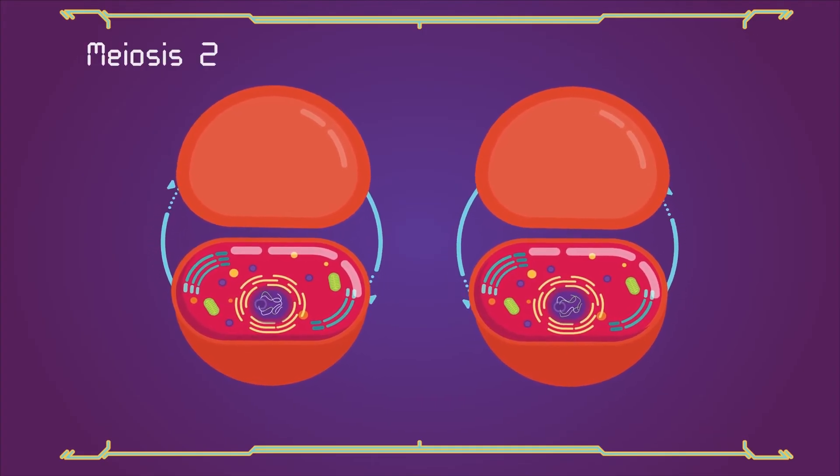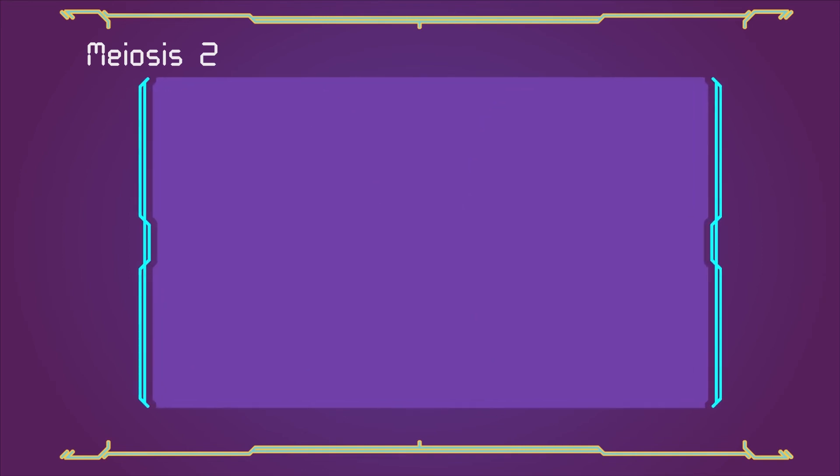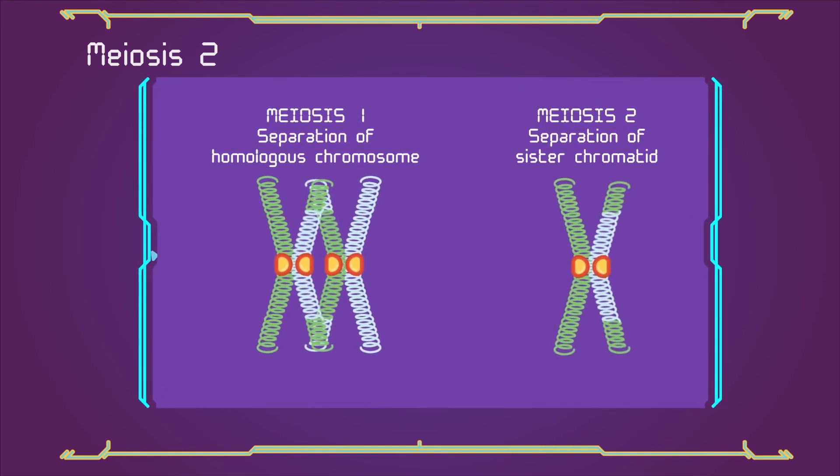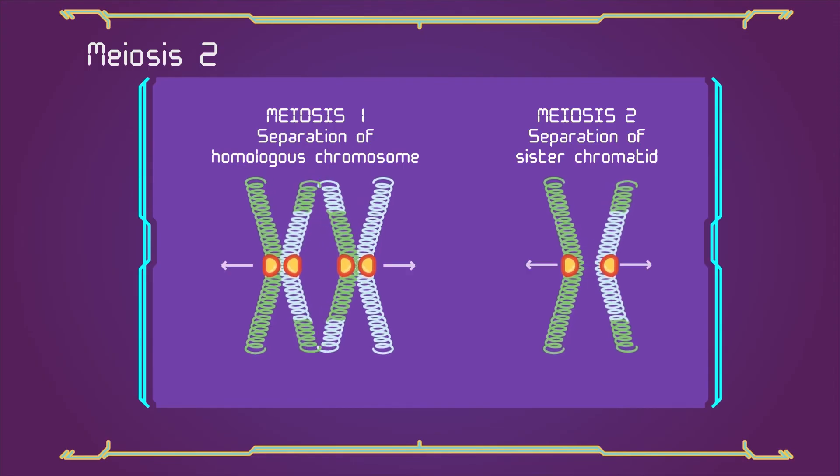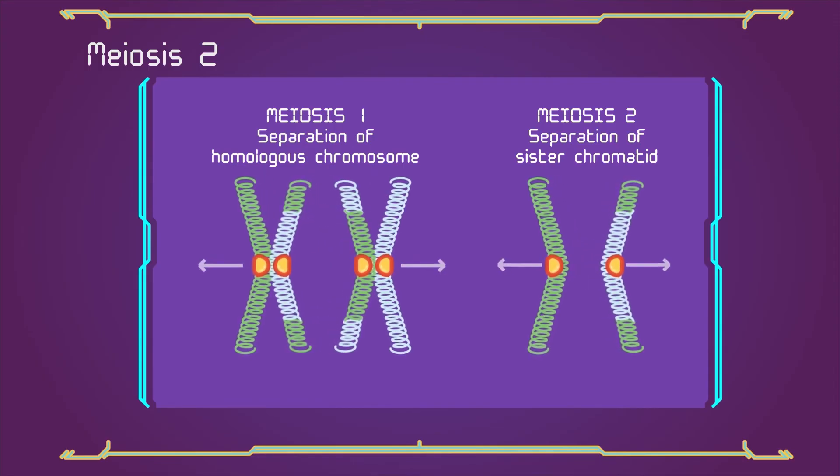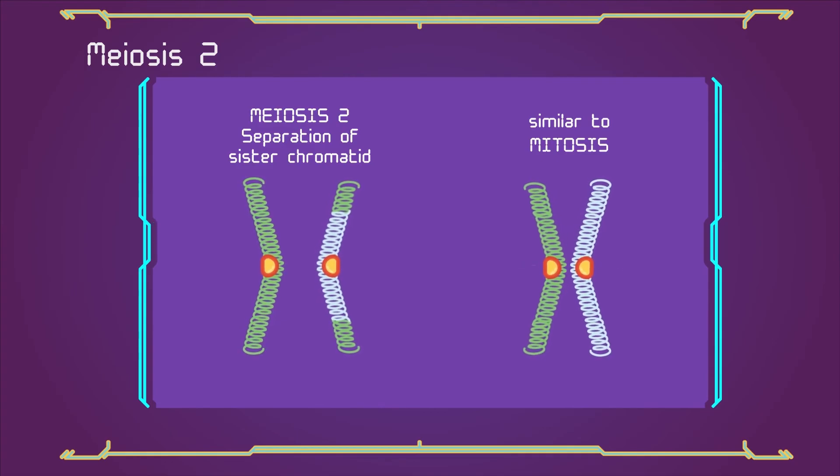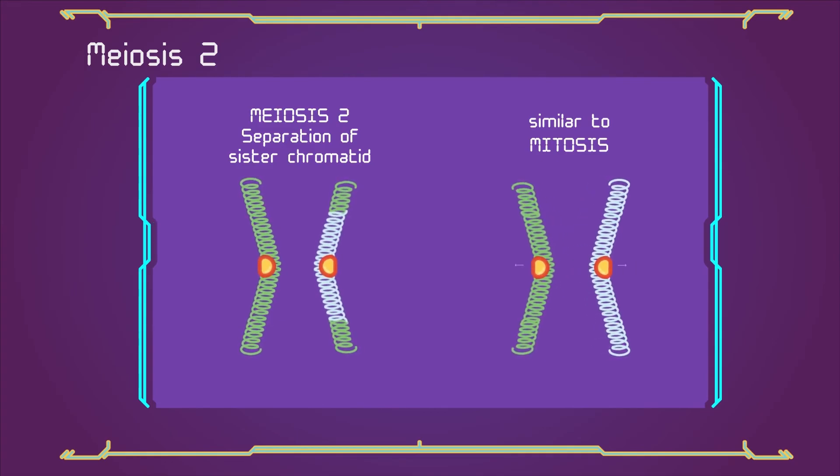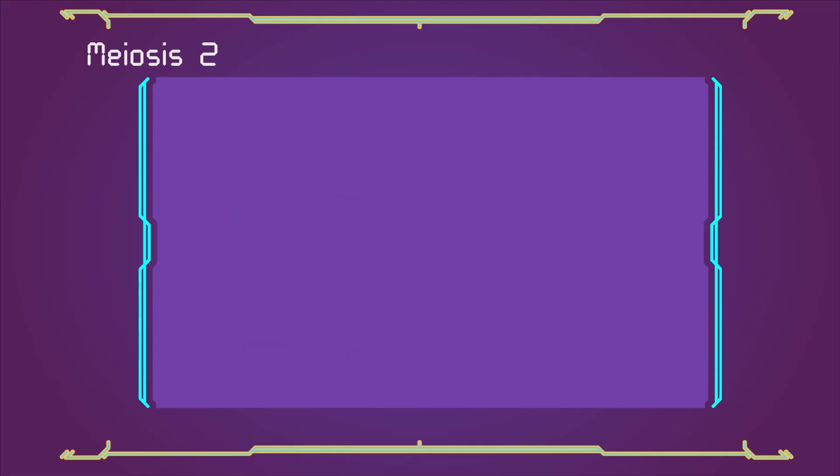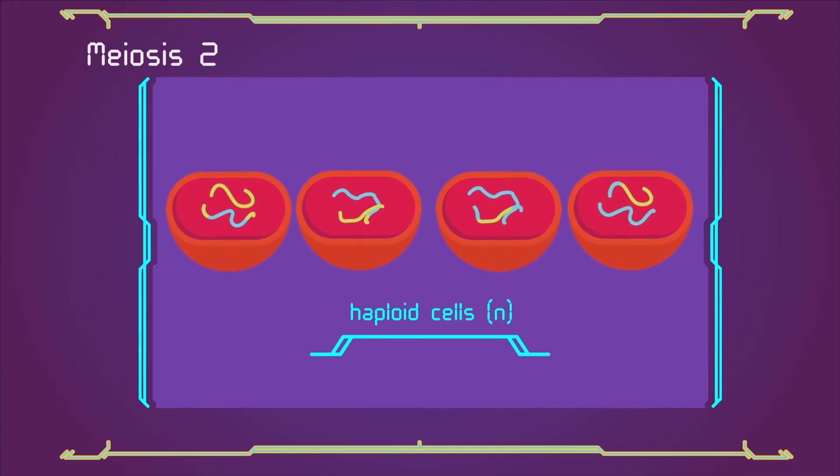Meiosis 2. Meiosis 2 is the second meiotic division, and usually involves equational segregation, or separation of sister chromatids. Mechanically, the process is similar to mitosis, though its genetic results are fundamentally different. The end result of meiosis 2 is production of four haploid cells (n chromosomes, 23 in humans).